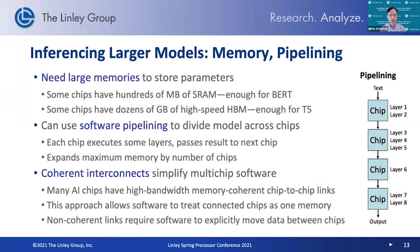What does it take to actually inference these large models? You need a lot of memory because you have to store the parameters on the chip. If they don't fit on chip, you're constantly fetching parameters from off-chip memory, which slows things down. We're seeing chips now that have hundreds of megabytes of SRAM on-chip, but even that's not anywhere close to enough for these big models. You need gigabytes of high-bandwidth memory to run these very large models.